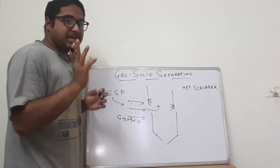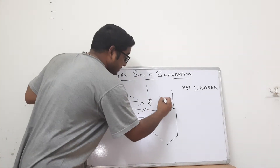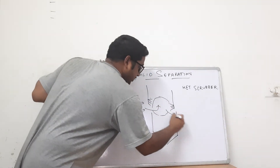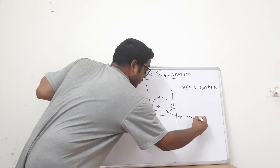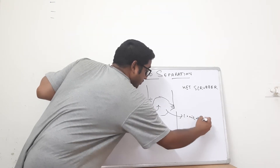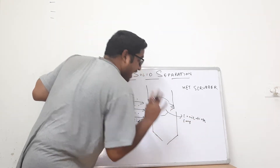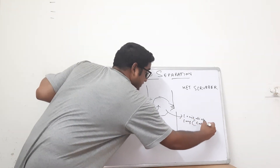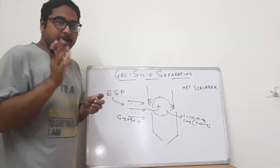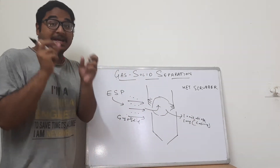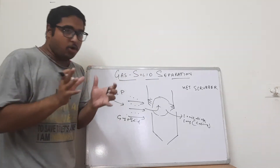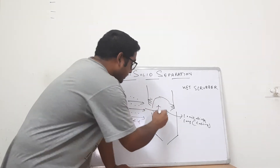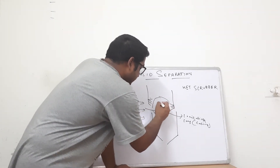As the gas moves up, there is a charging system. What does this charging system do? It basically ionizes the air that is present. Ionization means it forms ions — specifically cations — so it positively ionizes the air. This results in a release of electrons from the air particles, so the air gets positively charged and releases electrons.